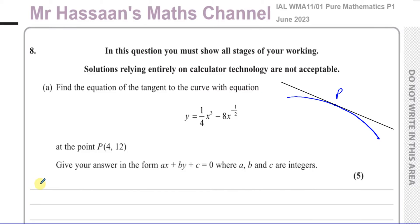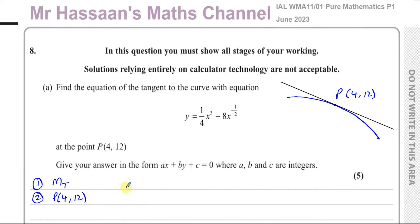The tangent is a straight line. To find its equation we need two things: we need the gradient of the tangent, and we need a point on the line — which we have, because the tangent goes through point P. We know P has coordinates (4, 12). The gradient of the tangent and the gradient of the curve at point P are the same, because the tangent has the same gradient as the curve at that point.